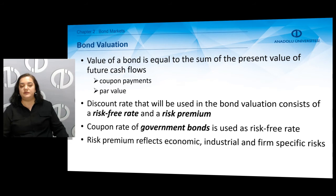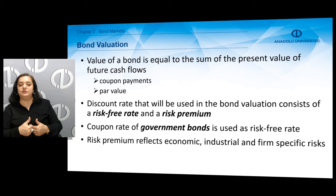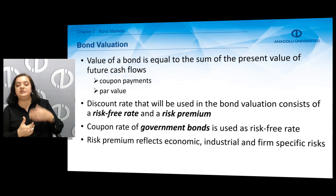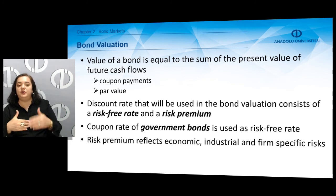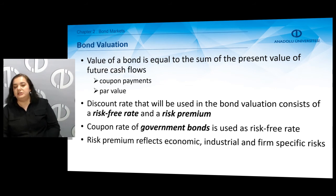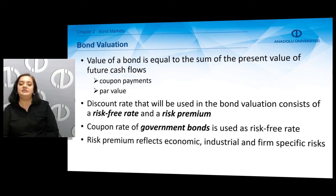The cash flows of a bond include coupon payments as well as the par value or nominal value at maturity. We need to discount those cash flows in order to find their present values. The discount rate used in bond valuation reflects the risk premium of these bonds, which is the rate of return above the risk-free rate. The risk-free rate is the rate of return of government bonds; since corporate bonds carry higher risk, they need to offer some return above this rate, and we call that difference the risk premium.